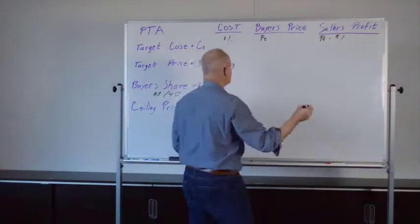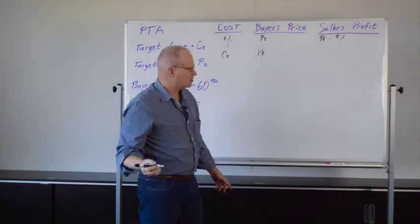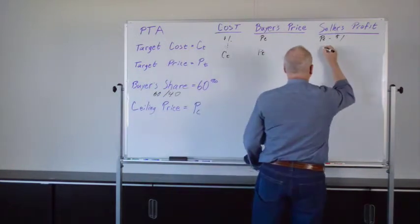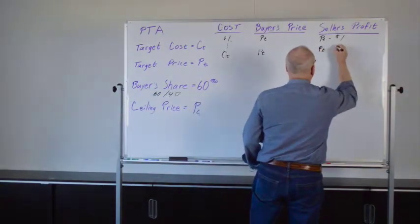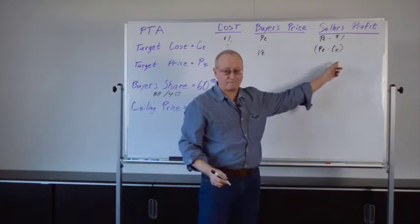And here, the buyer's price is still P sub T, the target price. The seller's profit is P sub T minus C sub T. And you could call that the target profit.